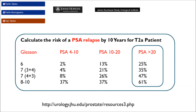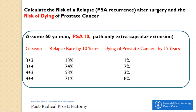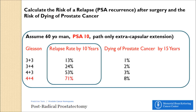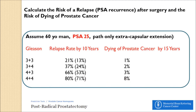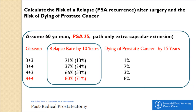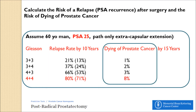Perhaps more important is the risk of dying of prostate cancer. From the Memorial calculator, a high Gleason would predict a 71% risk of relapse — but fortunately, the risk of dying of prostate cancer even by 15 years is only 8%. Generally, patients can have a PSA relapse but not die of the disease. If the PSA is changed to a higher number, say 25, the risk of relapse goes up to 80%, but the risk of dying of prostate cancer remains low — still only 8%.